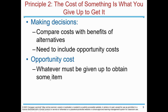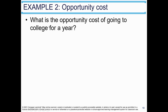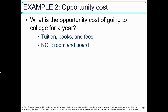Example of opportunity cost: what is the opportunity cost of going to college for a year? Tuition, books, and fees? Yes. Room and board? No — room and board is not included in opportunity cost because whether you are in college or at home, you will need room and board, so it cannot be included. Forgone earnings? Yes — when you are in college, you don't work. That is opportunity cost.